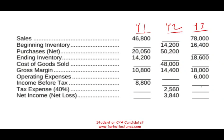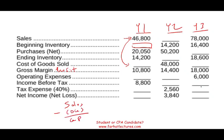Let's take a look at this exercise. We are given sales, but we are not given beginning inventory, cost of goods sold, operating expenses, tax expense, or net income. How do you solve this problem? You need to know the relationship between these accounts. I'm given sales and I'm given gross margin or gross profit. I know that sales minus cost of goods sold equals gross margin. This is an important formula.